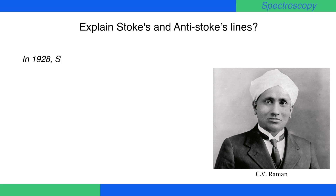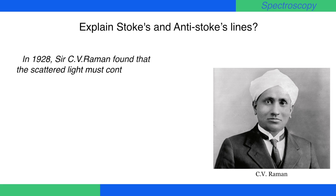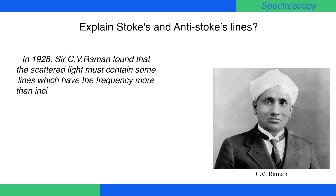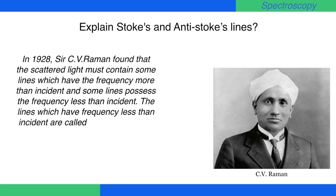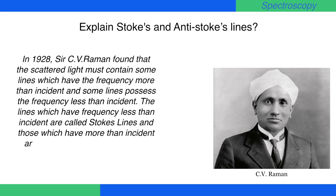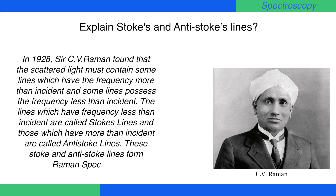In 1928, Sir C. V. Raman found that the scattered light contains some lines which have a frequency greater than the incident and some lines which possess a frequency less than the incident. The lines which have frequency less than incident are called Stokes lines, and those which have more than incident are called anti-Stokes lines. These Stokes and anti-Stokes lines form Raman spectra.